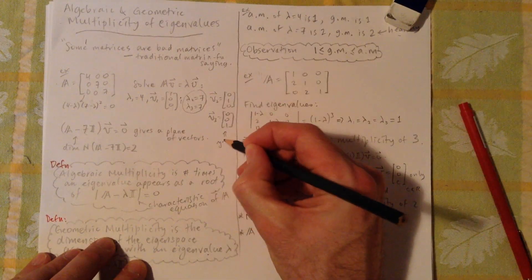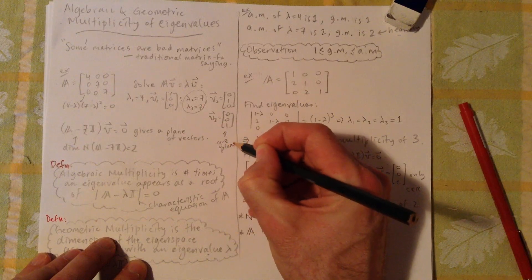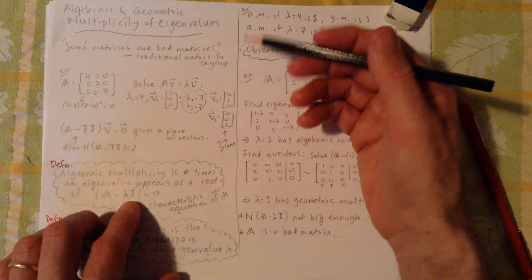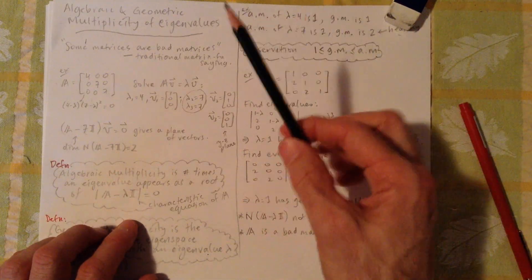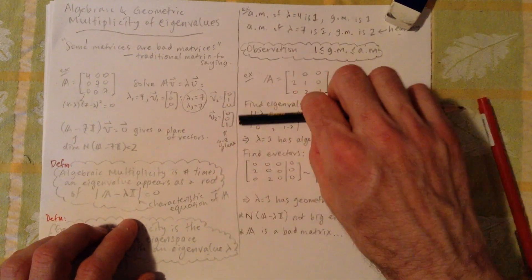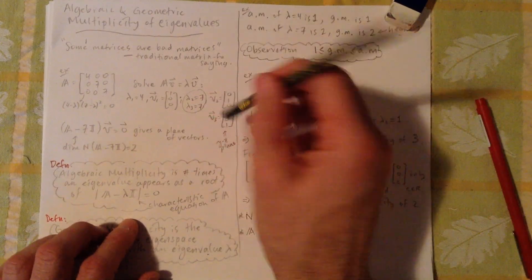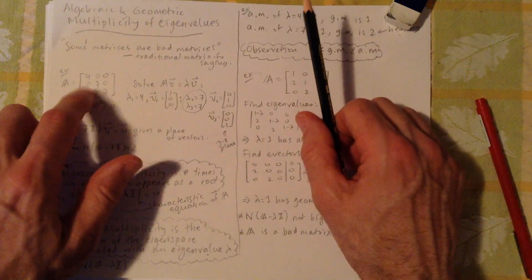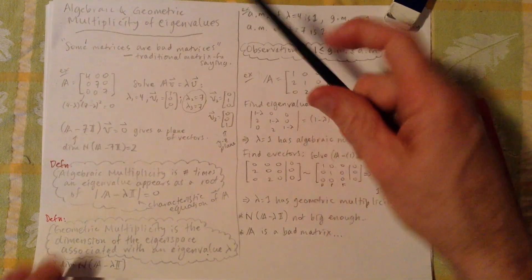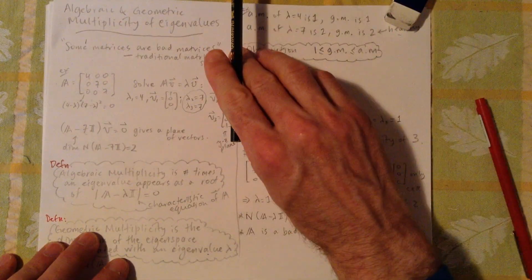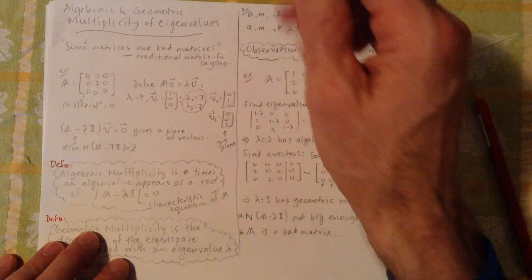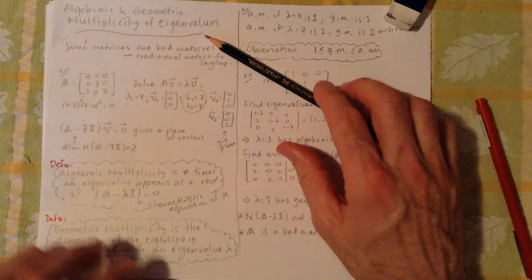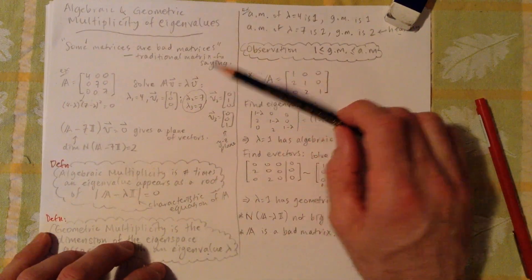We know there's some eigenvector here. There has to be at least one direction that 7 is associated with. And if you go through and solve it, you would end up with these two, here are two basis vectors for the space, and it's the yz plane, actually. That's the basis for the yz plane.